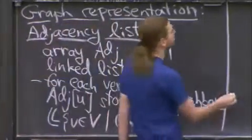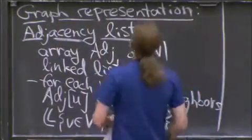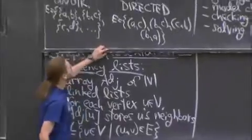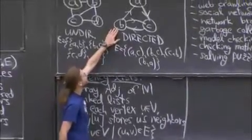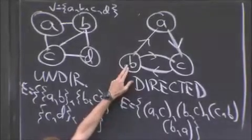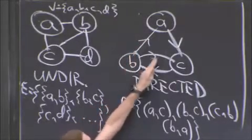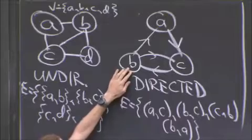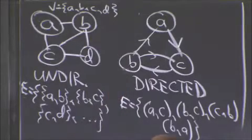So if you have a vertex, where are my graphs here? So if I have a vertex like b, adj of b is going to be both a and c. Because in one step, there are outgoing edges from b to a and b to c. So adj of b is a and c.